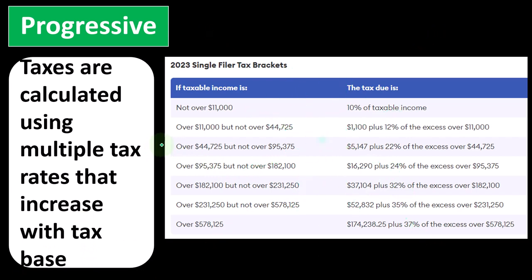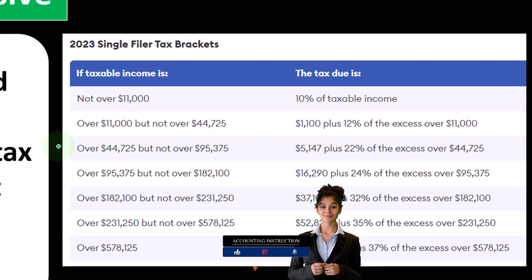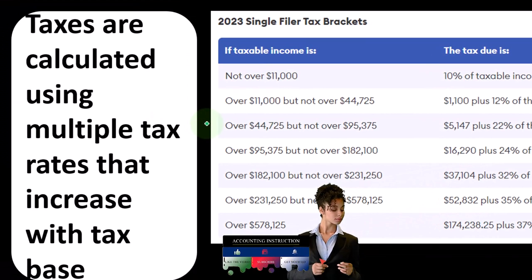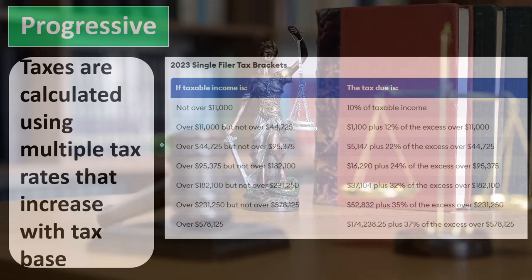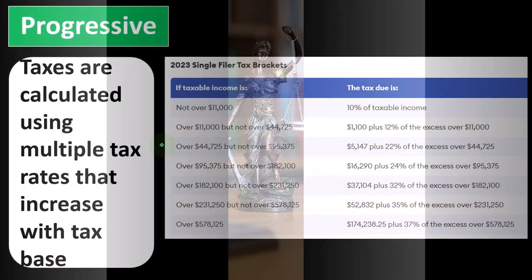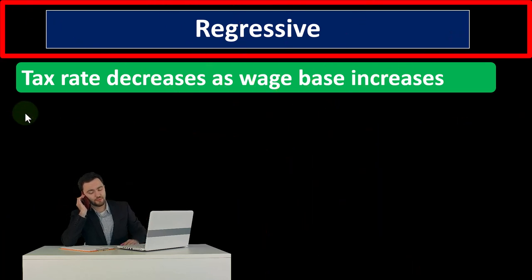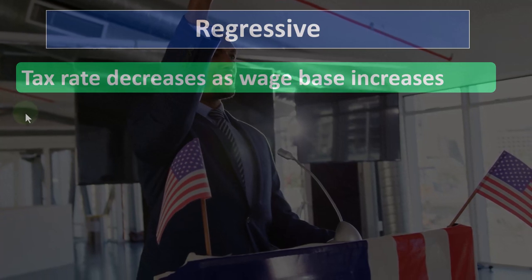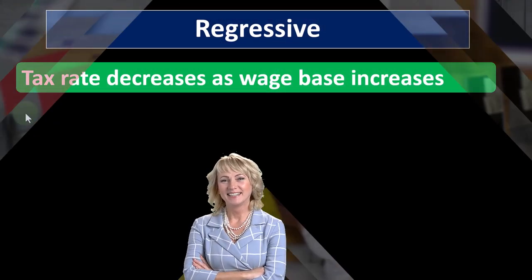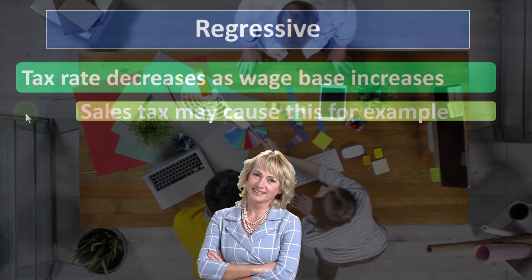The debate isn't usually flat tax versus progressive tax — we already have a progressive tax. The debate is about whether to make it more or less complicated, more or less flat, and what balance between fairness and conduciveness to GDP growth is appropriate. Regressive is always a term used to downplay a tax — a politician who doesn't like a tax calls it regressive, meaning the tax rate decreases as the wage base increases, so the burden falls more heavily on lower-income individuals.